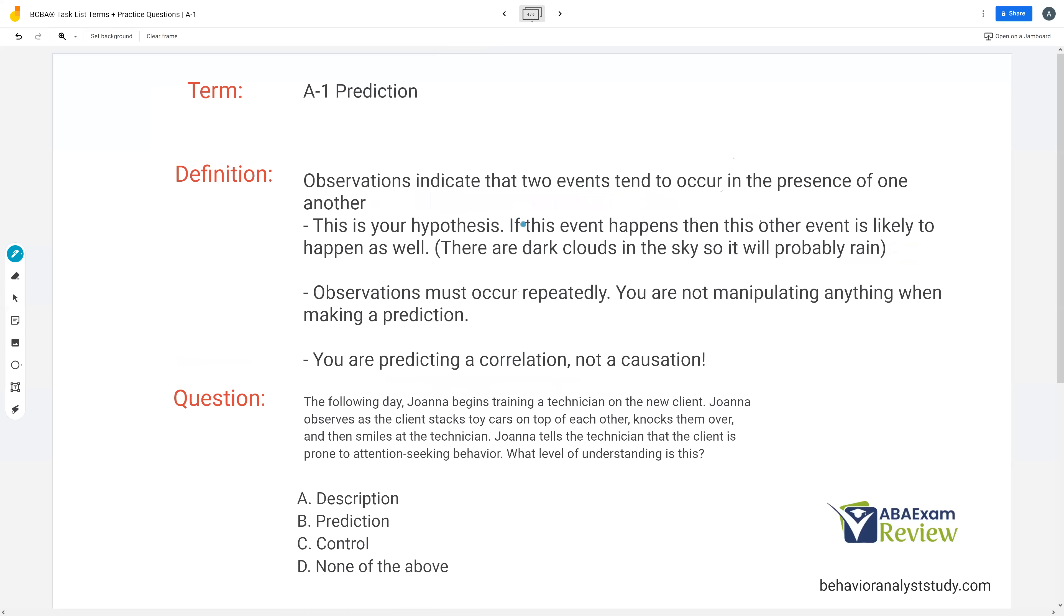Prediction. Prediction is the next level. After we've described and observed, now we're going to start to say, okay, when this happens, this tends to also happen. The two events tend to occur in the presence of one another. This is your hypothesis.